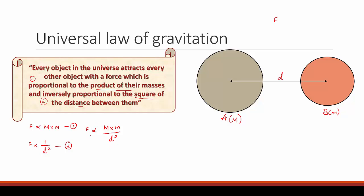We don't want to keep this as a proportionality, so we convert it into an equation using a constant. We end up with: F = G × M × m / D², where G is the universal gravitational constant.